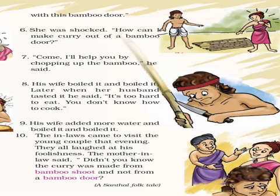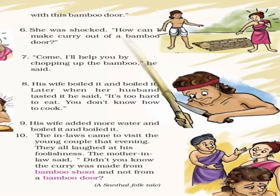His wife boiled it and boiled it. Later, when her husband tasted it, he said, "It's too hard to eat. You don't know how to cook." It is obvious that he had asked her to cook a bamboo door — you cannot chew that. It's not a vegetable that can be eaten. Instead of understanding this, he blamed his wife. So his wife added more water and boiled it and boiled it.